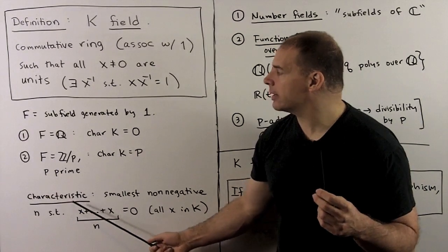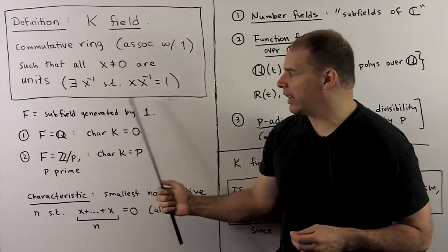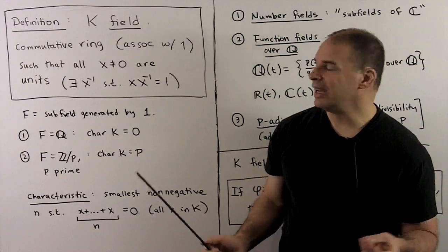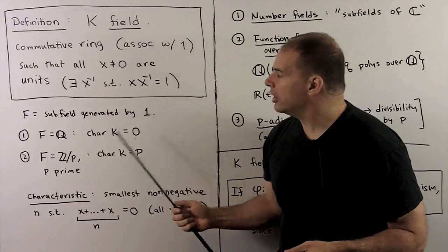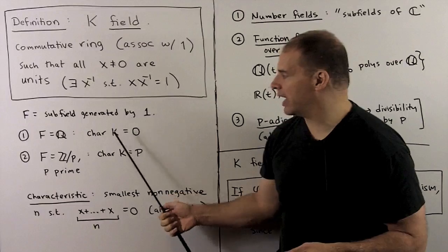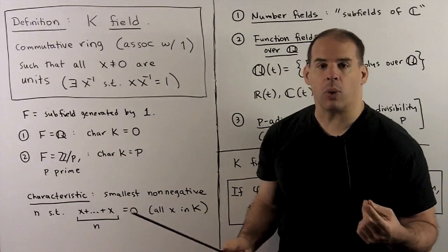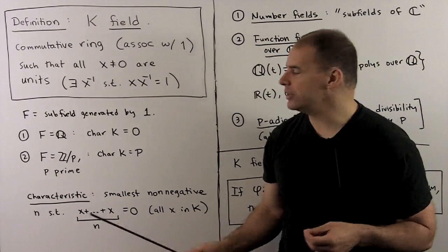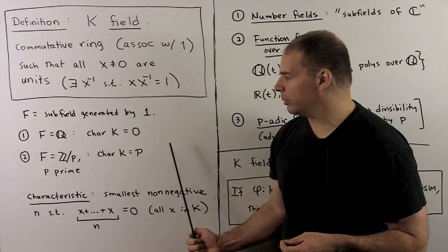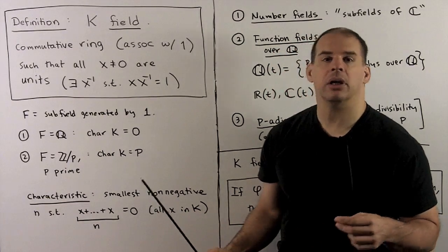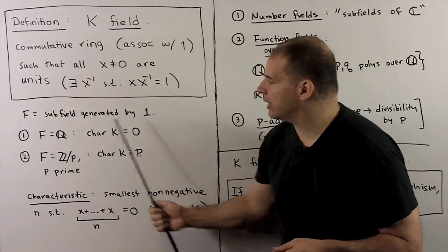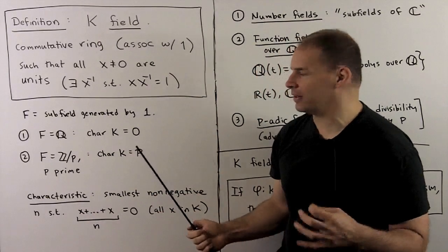To find the characteristic, we form the subfield generated by 1. Two things can happen: if 1 generates a copy of the rational numbers, the characteristic of K equals zero. Otherwise, 1 generates a prime field Z mod p, with p prime, and the characteristic of K equals p.